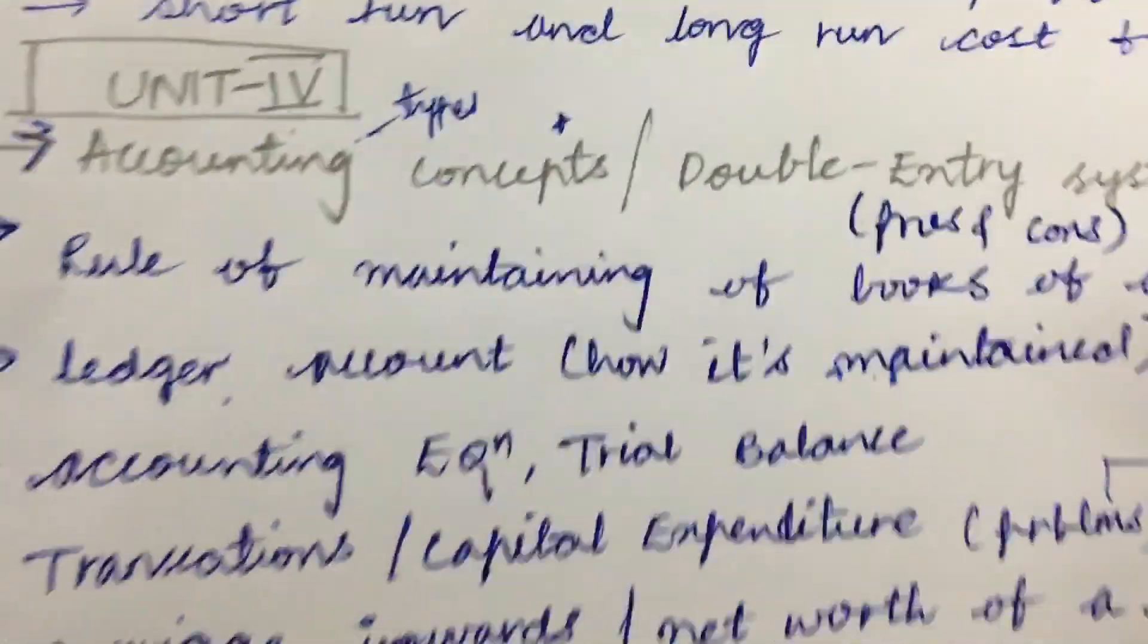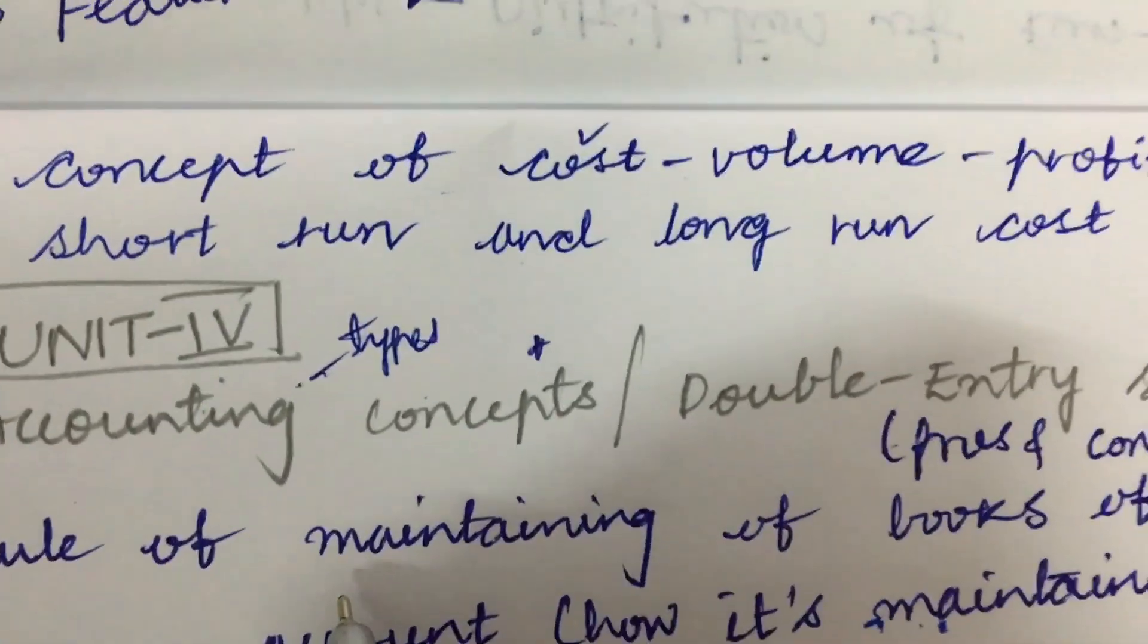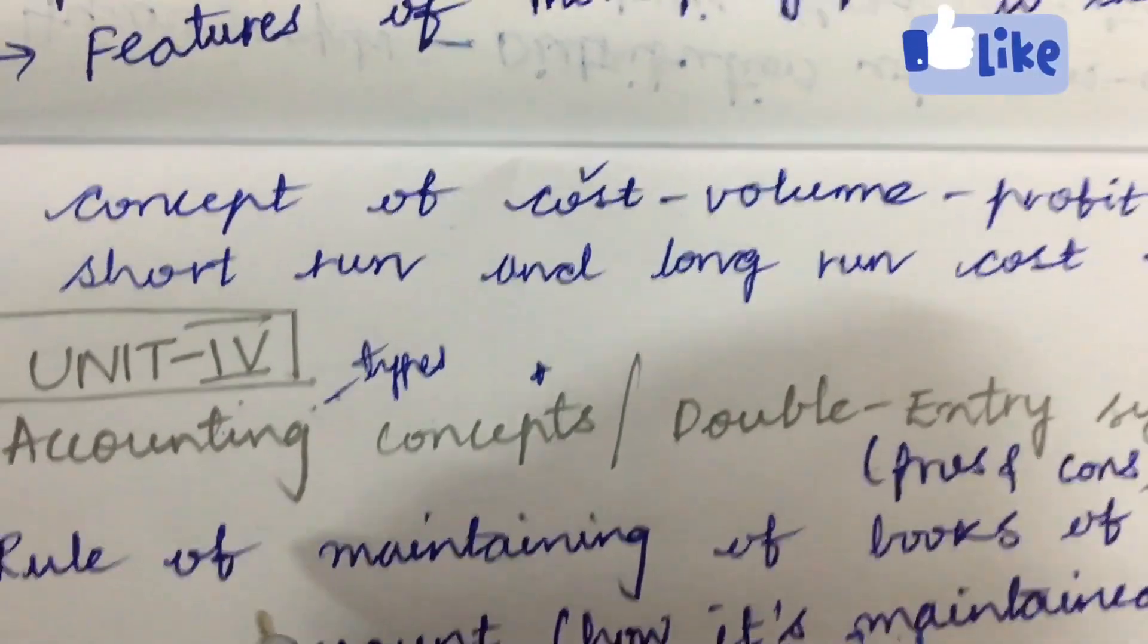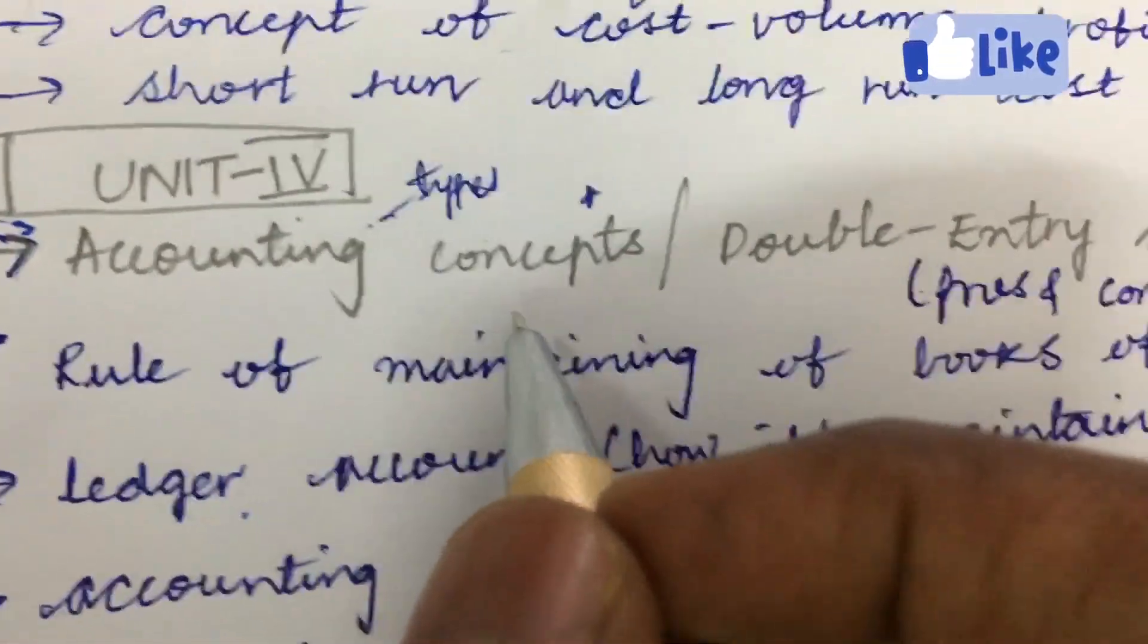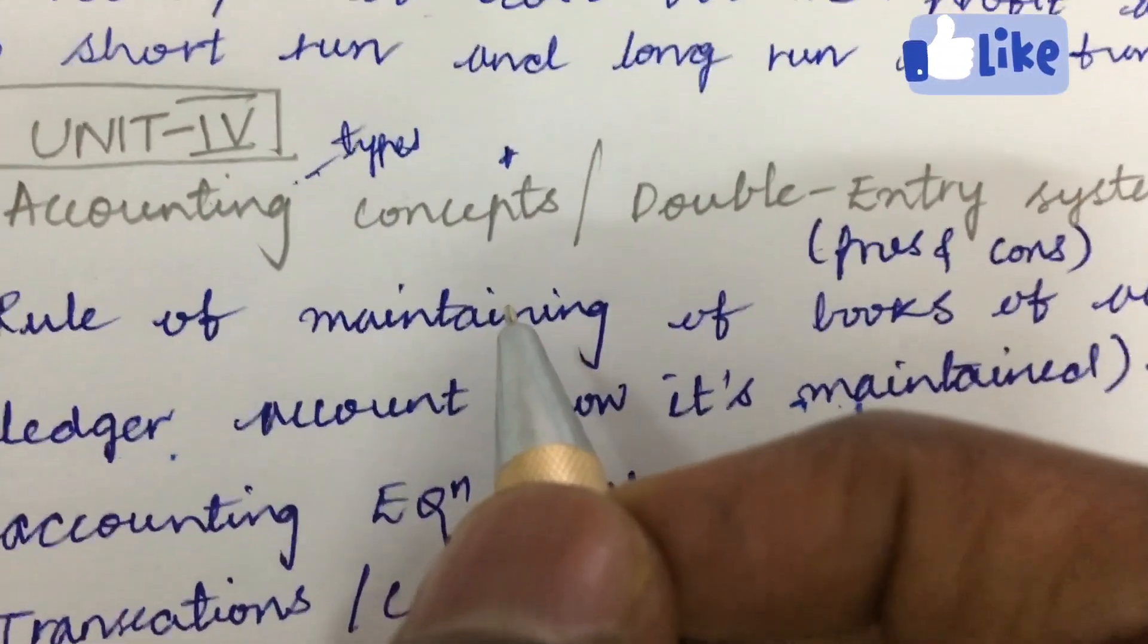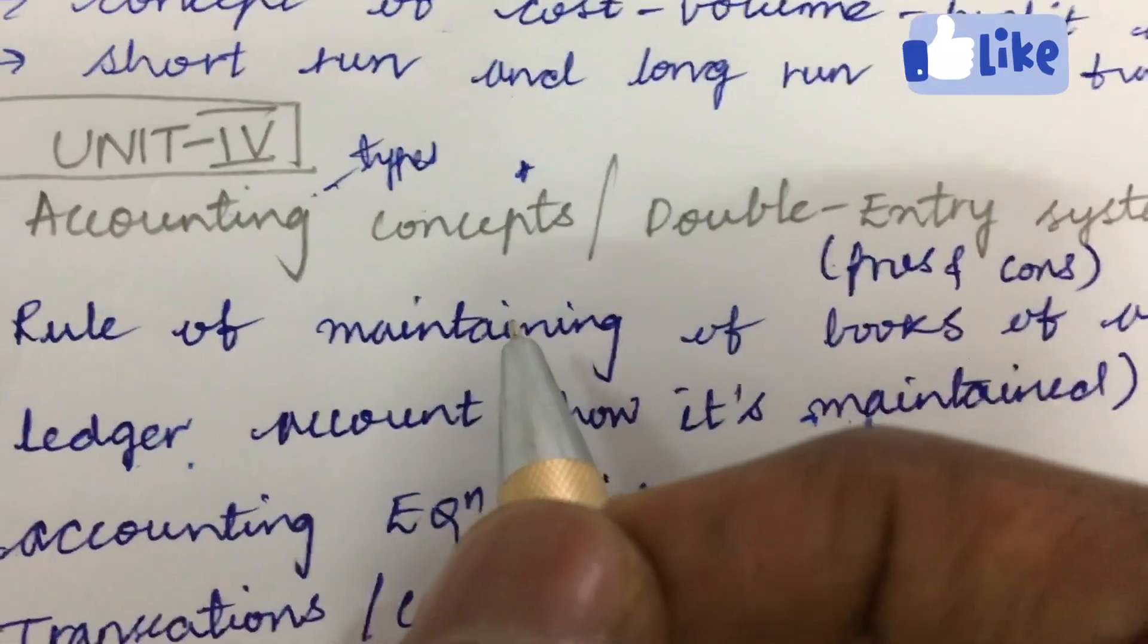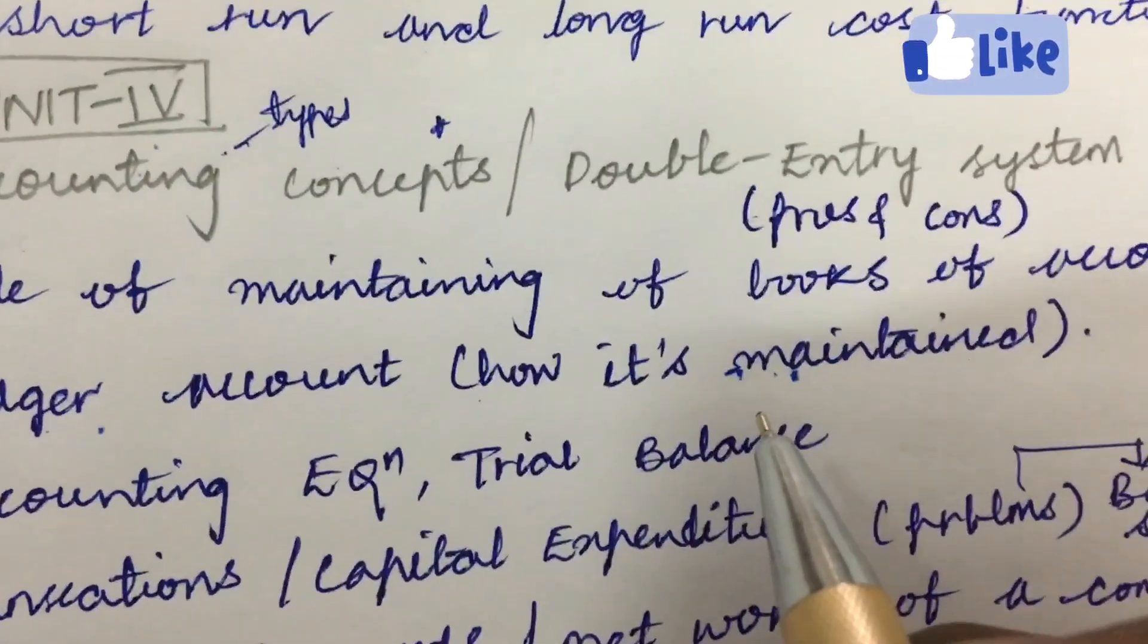If you look at Unit 4, it is a bit lengthy in structure. You can expect one and a half questions from Unit 4, or one and a half questions even from Unit 3 sometimes. Unit 4 is all about problems. Sometimes they are asking 15-mark problems and 5-mark theory, as well as 10-mark problems.